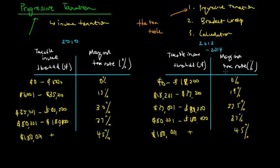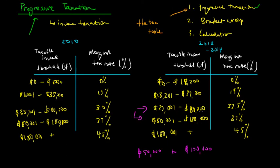Bracket creep is the idea that when your income increases, you move up tax brackets. For example, an increase in income from $50,000 — which sits in one bracket — to $100,000, which moves you up into the next bracket, means you have to pay a higher proportion of income in tax on that income above $80,000. The idea of bracket creep is that when your income rises, you move up tax brackets and face higher marginal rates.